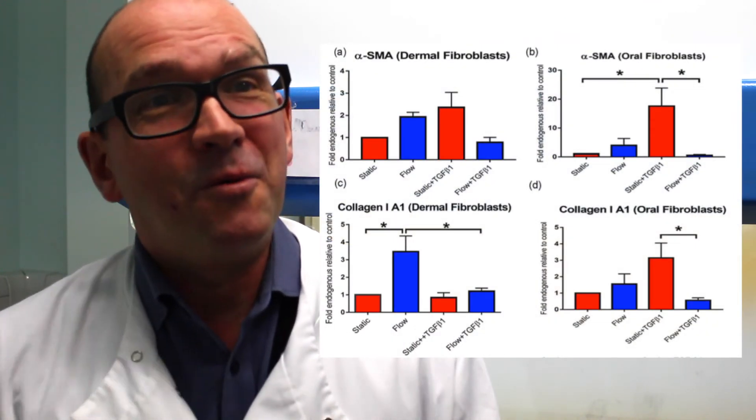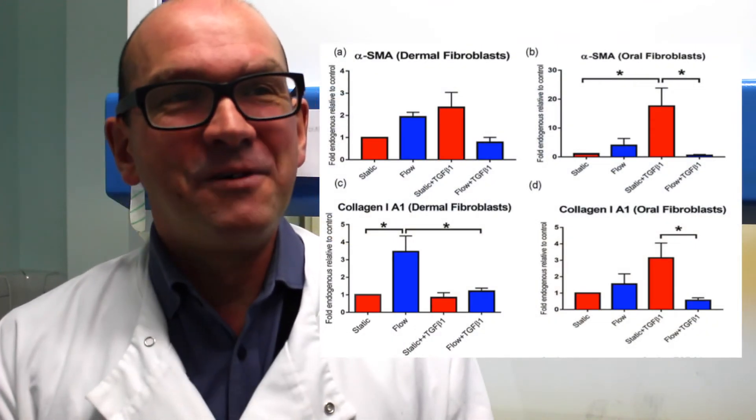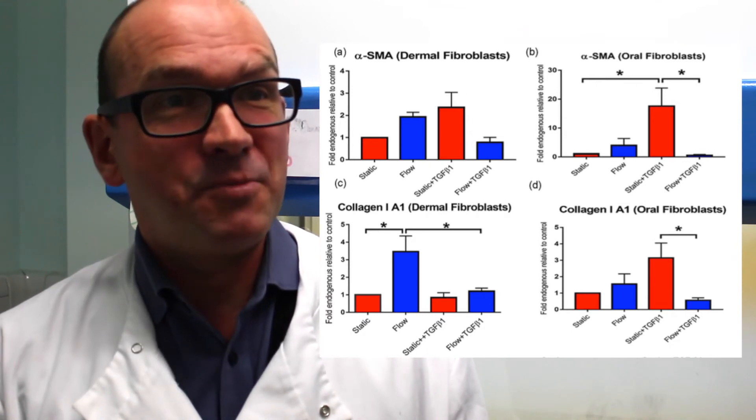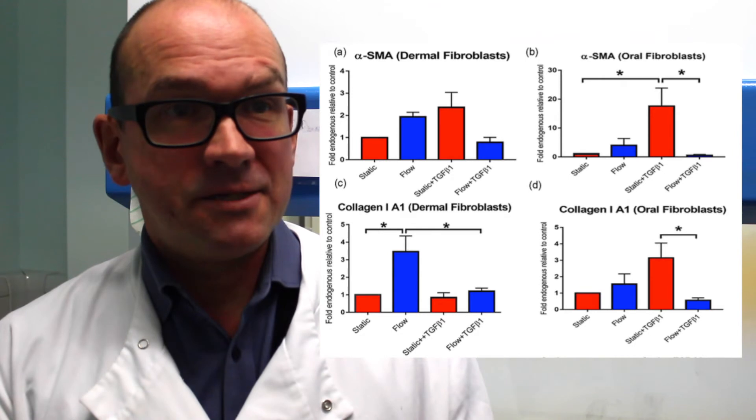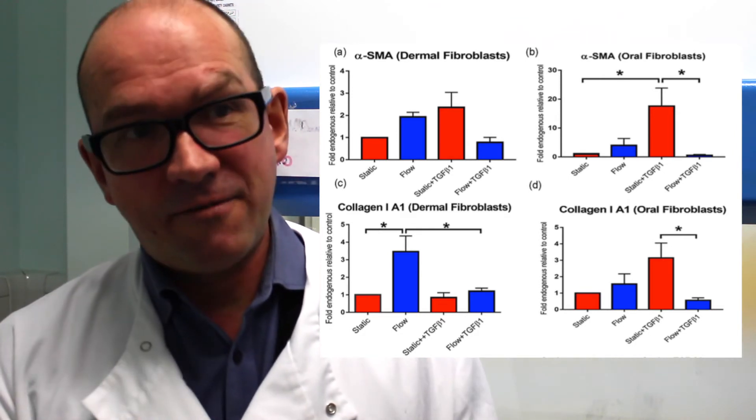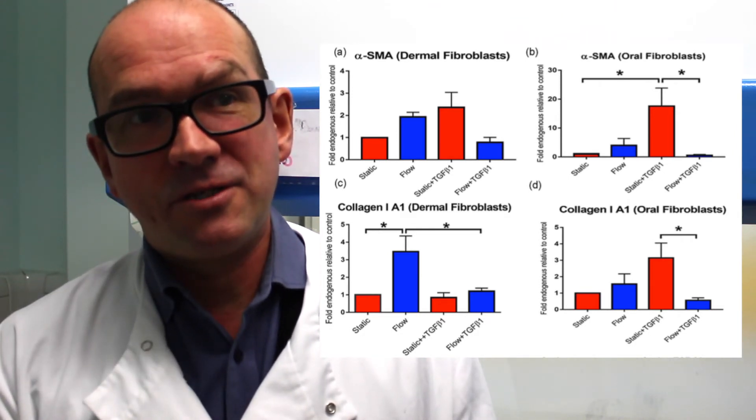If you're adding flow which stimulates differentiation and TGF-beta which stimulates differentiation, they seem to be antagonizing—the pathways seem to be antagonizing. You get a down-regulation of the differentiation response. That was surprising to me and quite interesting, so we went on to look at the mechanism by which that might occur.